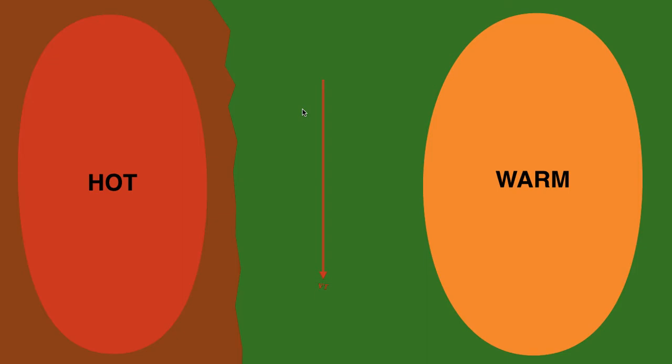Thinking about this in terms of thermal winds: if you apply the right-hand rule, you get a thermal wind vector that points from north to south — a northerly thermal wind. And on a typical severe weather day, you're typically going to have a wind that's southerly at the surface.